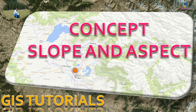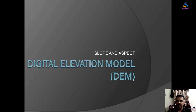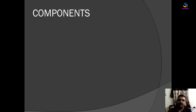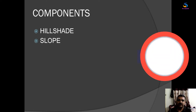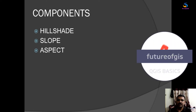Hello friends, welcome back to QGIS Basics. In this video today we will discuss slope and aspect. Some of our viewers are having difficulty understanding slope and aspects, which are run on a DEM file — that is, a Digital Elevation Model. Let us first understand what slope and aspect are. There are three components to keep in mind: hillshade, slope, and aspect.